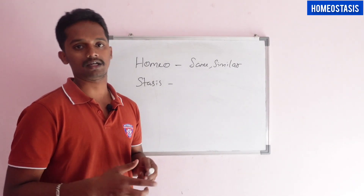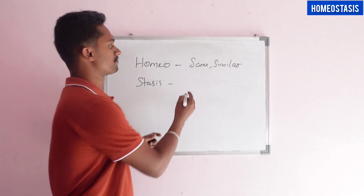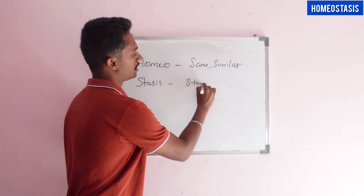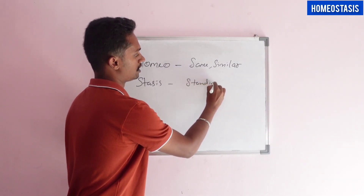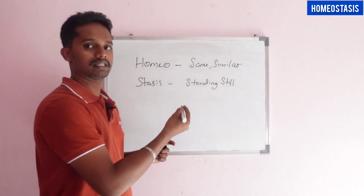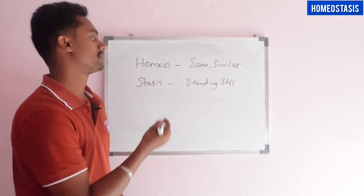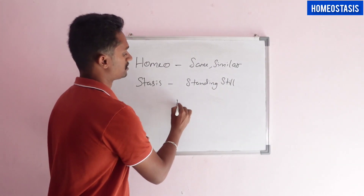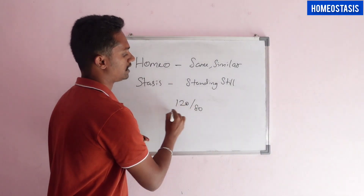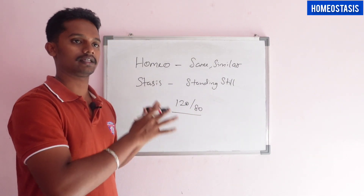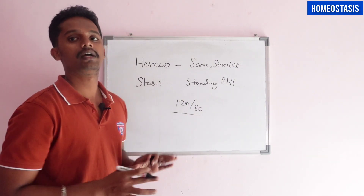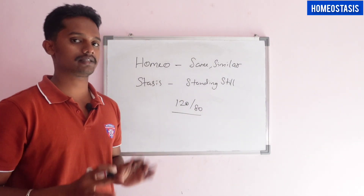What does stasis mean? In English, stasis means 'standing still.' For example, we have blood pressure at 120/80 — still standing. Standing still is stasis.